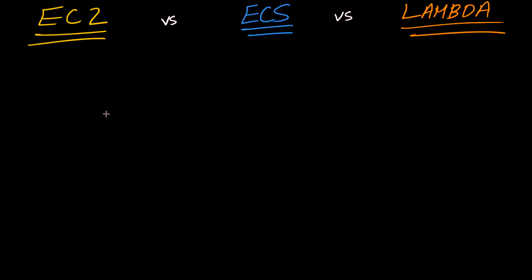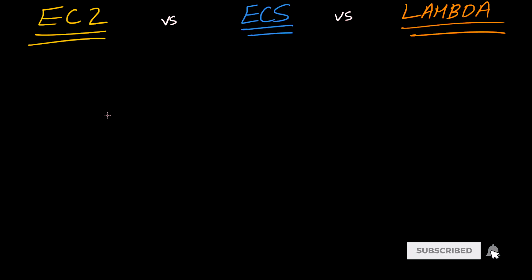In this video we're going to be talking about the difference between EC2, ECS, and Lambda functions in AWS. These are different compute options in the AWS ecosystem — where you host your applications. Each is slightly different depending on what you're trying to do, and the goal of this video is to help you understand what EC2, ECS, and Lambda are, so you can pick whichever solution is right for your next project.